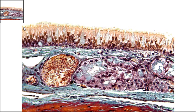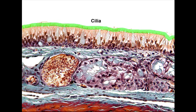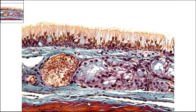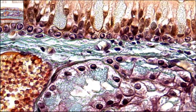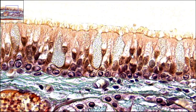On the apical surface up here — that's the surface that's exposed — you can see these cilia, all these tiny little hair-like projections. If we zoom in here, you can see the nice detail of the individual cilia.